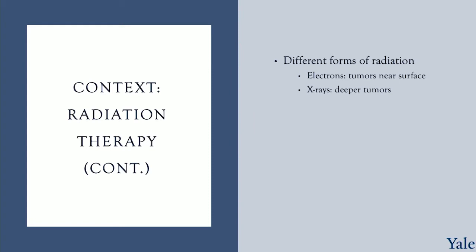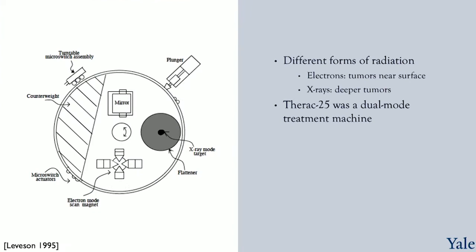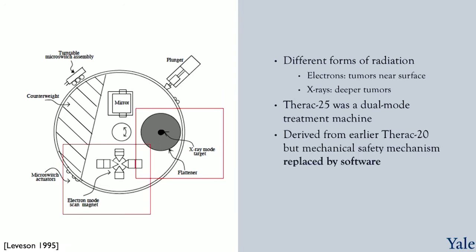Direct exposure to x-ray can cause serious harm to patients. Therac 25 was a dual-mode treatment machine, meaning it had both electron and x-ray treatment capabilities. You can see where there could be a potential problem here. The figure on the left shows the turntable setup, which has both the x-ray and the electron treatment regions. Notice the flattener that must be aligned with the x-ray source in order to prevent direct exposure, and the scan magnet that aligns with the electron source to direct its beams. A computer adjusts the turntable position. This machine derived from an earlier Therac 20 model. Therac 25 replaced mechanical safety mechanisms with software, which supposedly would check the turntable settings. Failures within the software caused several incidents of radiation poisoning when the electron magnets were wrongly aligned with the x-ray, leading to severe injuries and death.